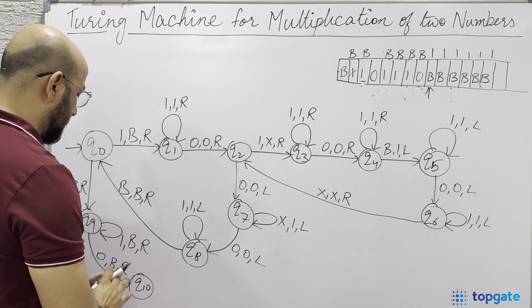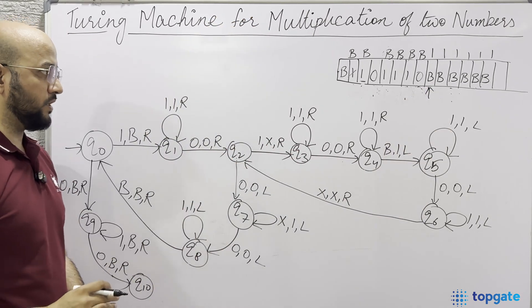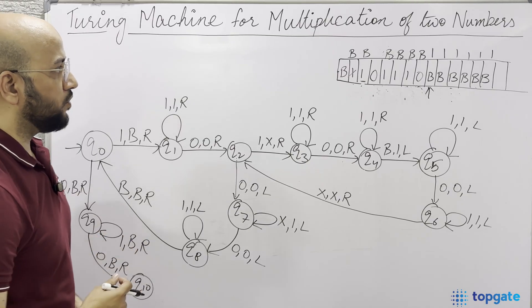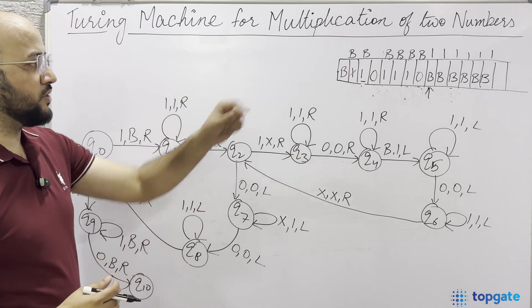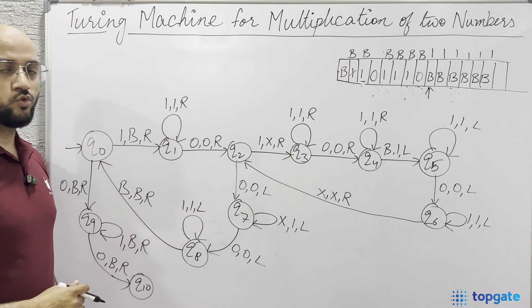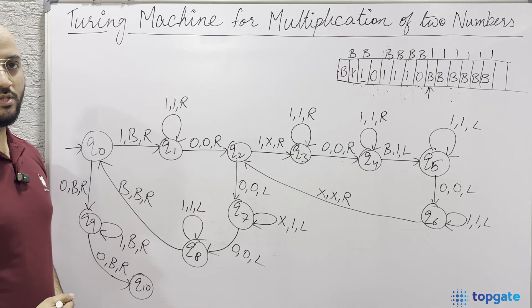This is the Turing machine for the multiplication of two unary numbers. I hope this is clear to you. Thank you so much.